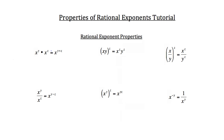This property states that if you have two exponents with like bases — in this case, x raised to the y and x raised to the z, where both bases are common — that would end up equaling x to the y plus z. To prove it, let's plug in some random numbers for x, y, and z.